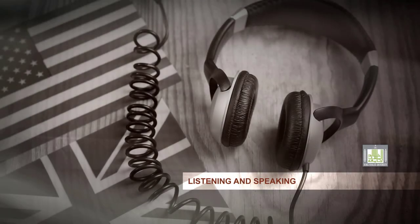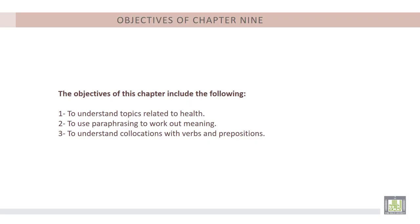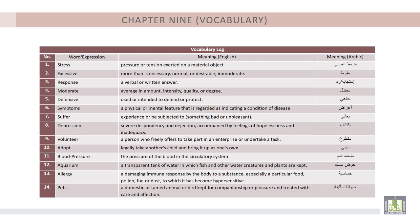Listening and Speaking for Level 4 Students, Chapter 9. The objectives of this chapter include the following: 1. To understand topics related to health. 2. To use paraphrasing to work out meaning. 3. To understand collocations with verbs and prepositions. The vocabulary log of this chapter includes the following.